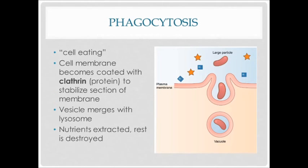With phagocytosis — this means cell eating. During phagocytosis, the cell membrane becomes coated with clathrin, which is a protein that helps to stabilize the membrane. The vesicle, once it forms and pinches off from the plasma membrane, will merge with a lysosome. The lysosome will break all of the materials down, the nutrients will be extracted, and then the rest will be destroyed.